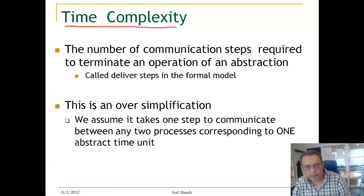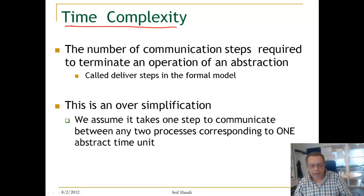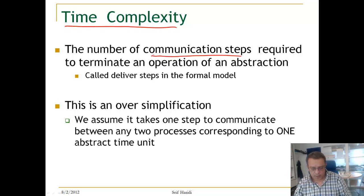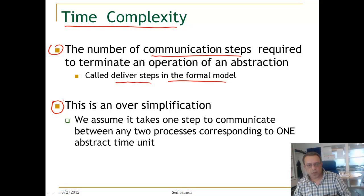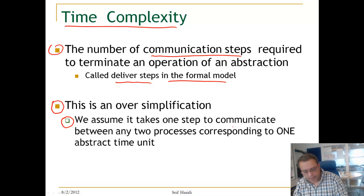We are going to make an oversimplification and talk about abstract communication steps. It is the number of steps it takes to send a message from one process to another — that is, the number of communication steps required to terminate an operation of an abstraction. In the formal model, we call this a communication step: delivery. This is an oversimplification because communicating between two processes might take an arbitrary amount of time depending on how close or far they are, but we use this simplification as long as it is sufficient.